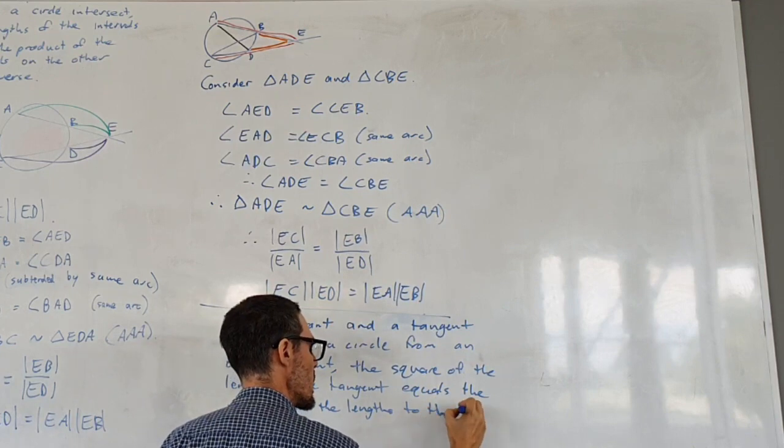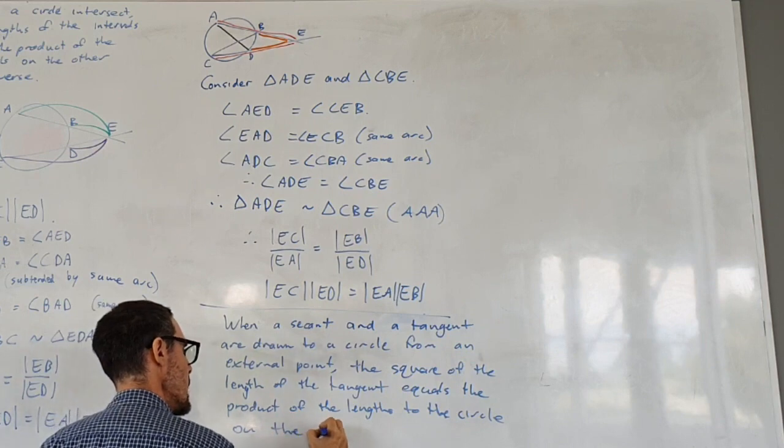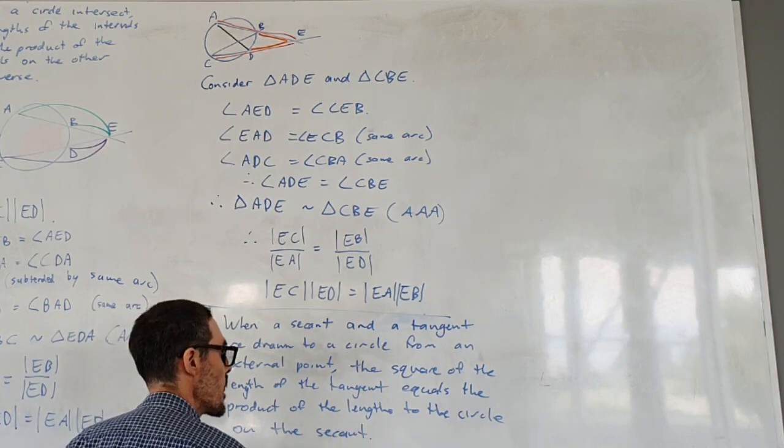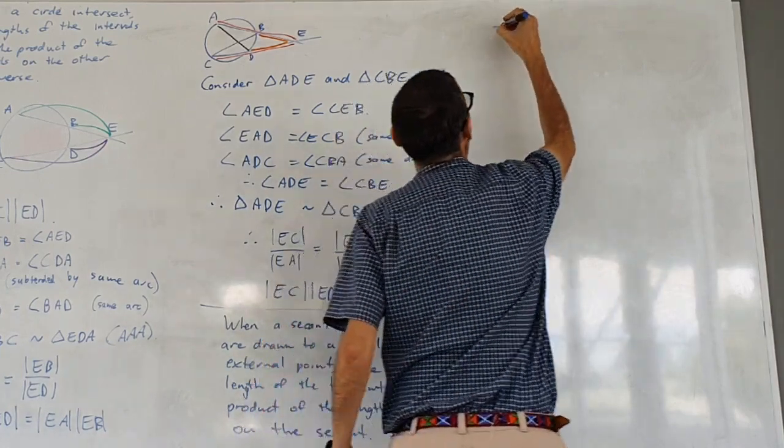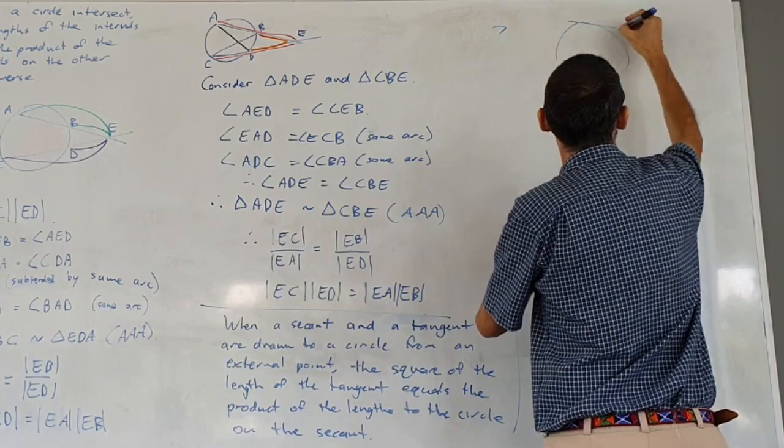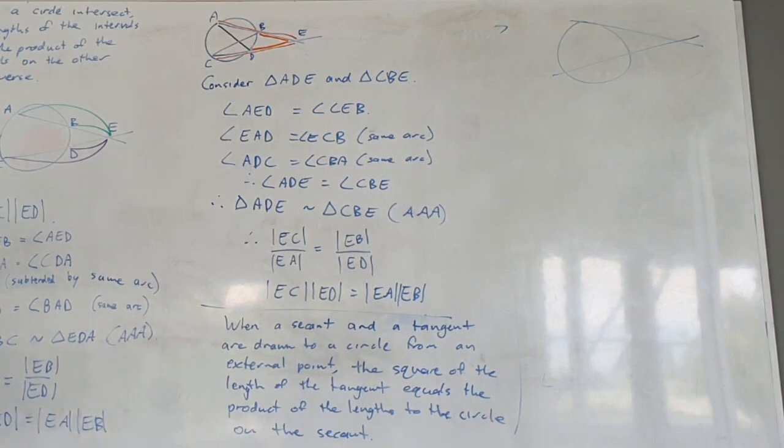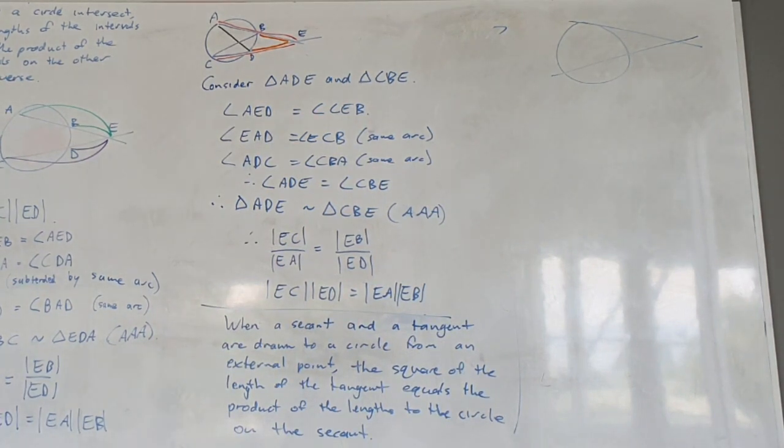To the circle on the secant. I'm going to run out of room for examples. Some people call this the tangent secant theorem for obvious reasons.